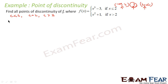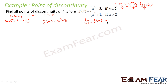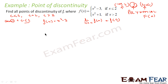Case one: c is less than two. If c is less than two, f(x) is nothing but x cubed minus 3, and this is a polynomial function. For polynomial functions the limit exists and they are continuous. So I can say that the limit of f(x) as x tends to c equals f(c). You can take any point less than two and try to find the limit — you will see that it exists and equals f(c). So for c less than two, the function is continuous.